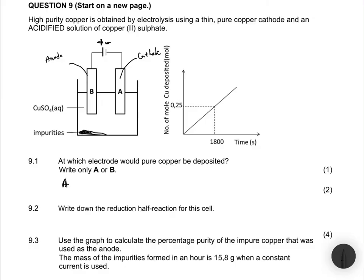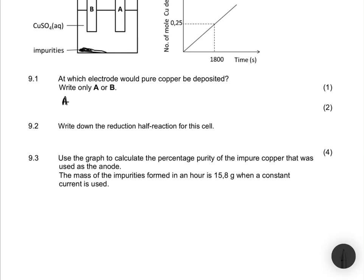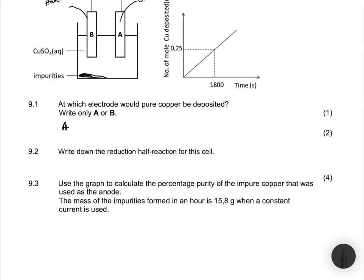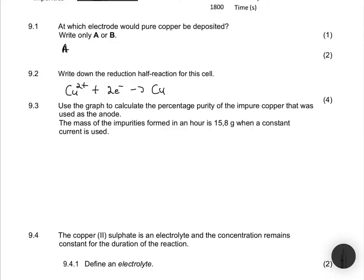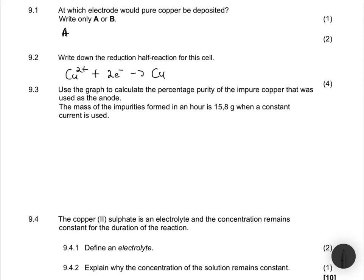Question 9.2 asks for the half-reaction for this cell. Pure copper is deposited at the cathode, and at the cathode reduction takes place. So we have: Cu²⁺ + 2e⁻ → Cu. That is the reduction half-reaction for this cell.